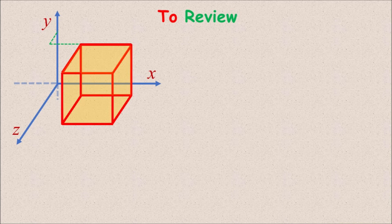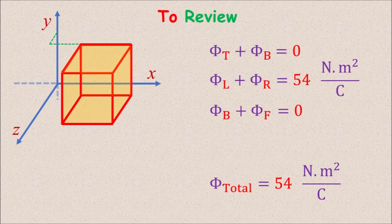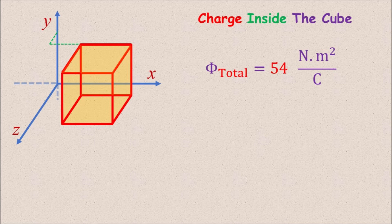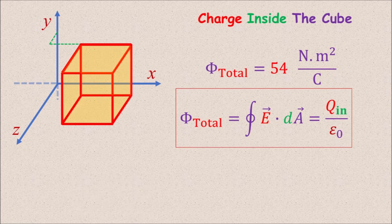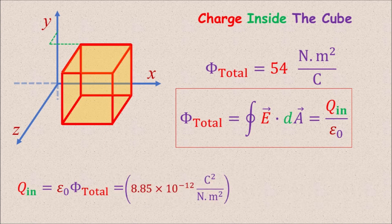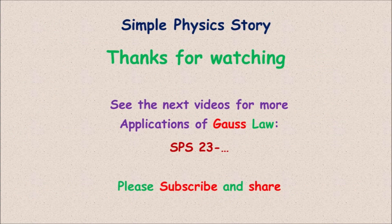Summarizing: the net outward flux through the top and bottom faces is zero, the net flux through the left and right faces is 54 Newton meters squared per Coulomb, and the net flux through the front and back faces is also zero. So the total net flux is 54 Newton meters squared per Coulomb. Applying Gauss's law, the net charge inside the cube equals epsilon naught times the total flux: 8.85 times 10 to the negative 12 Coulombs squared per Newton meter squared times 54 Newton meters squared per Coulomb, which gives 478 picocoulombs of net charge inside the cube. I hope you enjoyed this video. Thanks for watching and have a nice day.